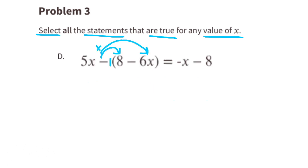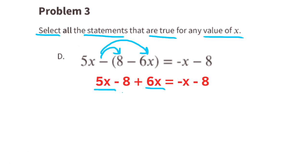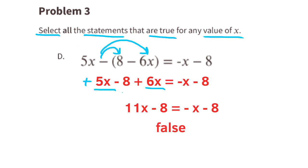Option D: a negative times a positive is a negative, and a negative times a negative is a positive. So we can rewrite this statement as 5x minus 8 plus 6x on the left side of the equal sign. Combining the like terms, 5x plus 6x is 11x, so the left side reads 11x minus 8, and the right side is negative x minus 8. Since 11x minus 8 is not equal to negative x minus 8, this statement is false.